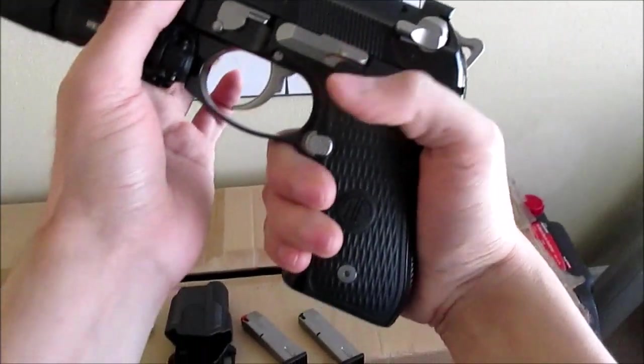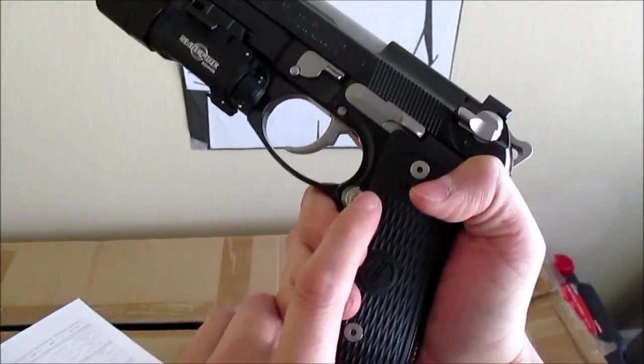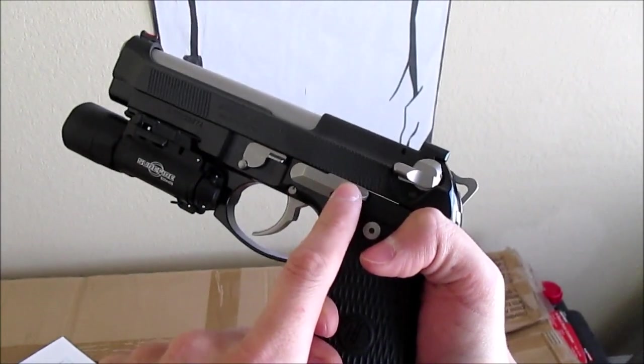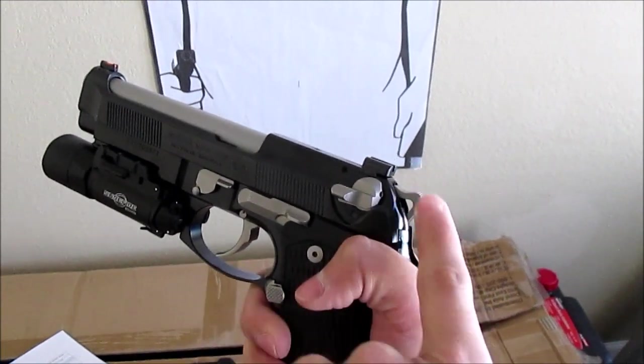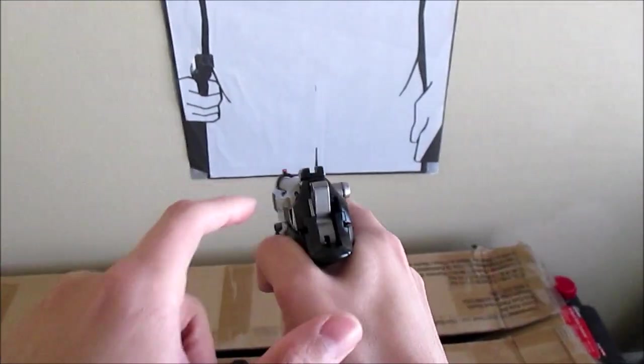And here we have the magazine release button. Here we have the slide release. Obviously the trigger. An external hammer. And your sights.